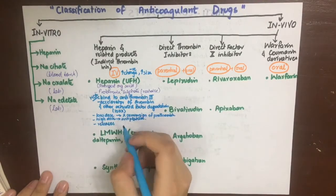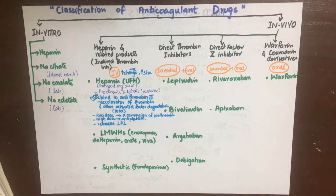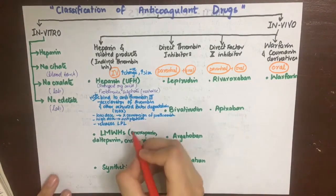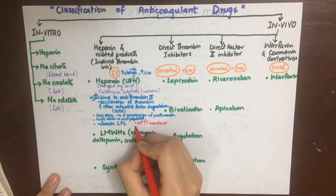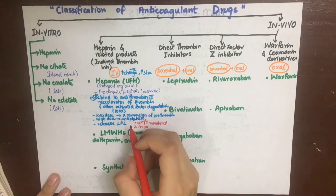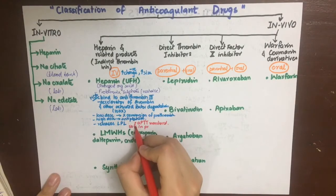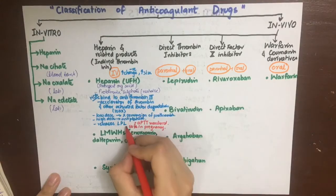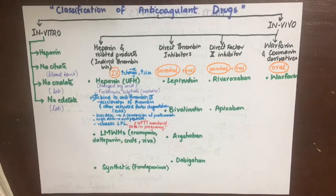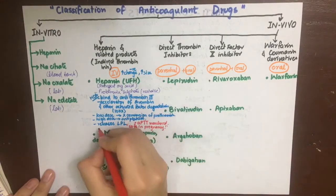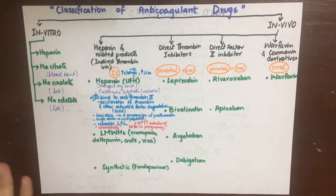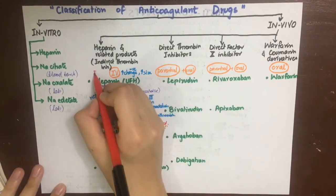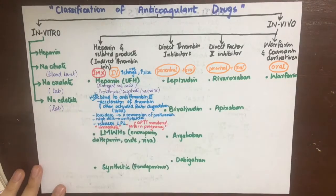During heparin therapy, the activated partial thromboplastin time or APTT, which is a screening test that helps evaluate a person's ability to appropriately form blood clots, should be monitored and maintained at 1.5 to 2.5 times the control. It is safe in pregnancy and when administered as IV infusion it has an immediate action. It should not be given orally because it has a high negative charge and increased size, and should not be given intramuscularly because it will cause hematoma formation. Side effects of unfractionated heparin include bleeding, heparin-induced thrombocytopenia, hypersensitivity reactions, osteoporosis, and reversible alopecia.